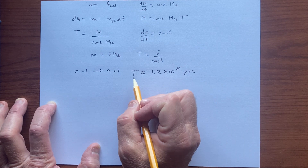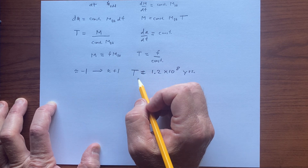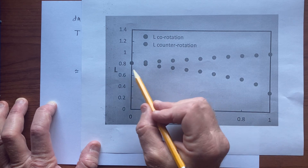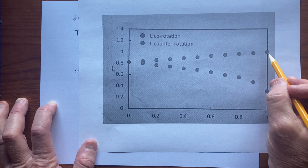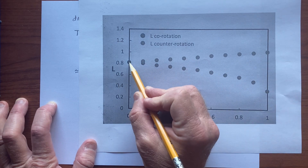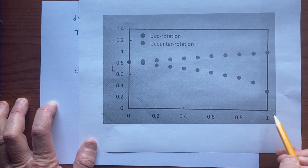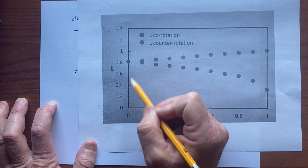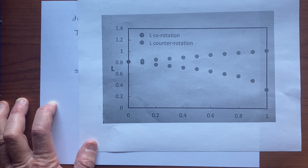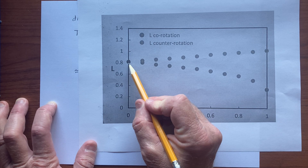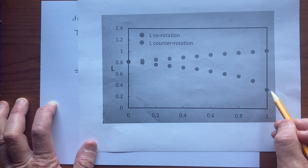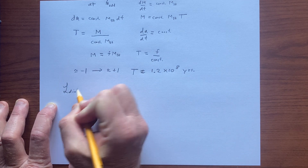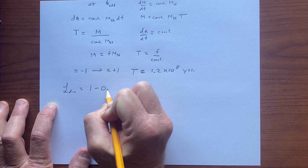We can use this to get a sense of how long it takes to change the spin for different ranges of values. If we remember our plot of angular momentum as a function of spin — where this side is counter-rotation and we spin the black hole down to zero spin, then back up to the maximum value close to 1 — the dimensionless angular momentum is scaled to 1 for high spin and counter-rotation. We can see that we are above about 0.82, and we estimate we end up at about 0.3.